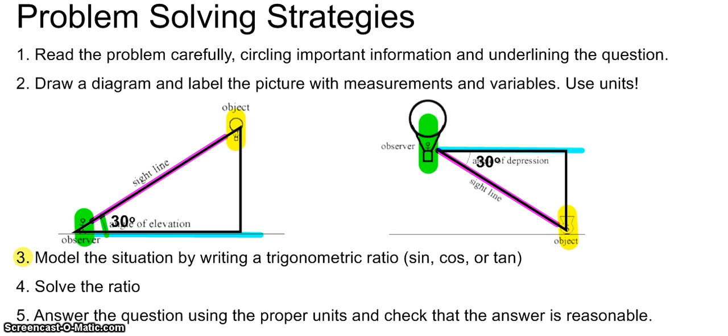Next, number three, we'll model each situation by labeling the sides with opposite, adjacent and hypotenuse and then writing a trigonometric ratio such as sine, cosine or tangent. Next in number four, we'll solve the ratio either by multiplying and dividing or by using an inverse trigonometric function such as inverse sine, inverse cosine or inverse tangent.